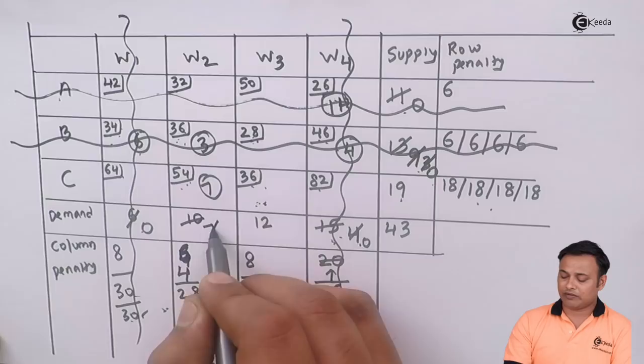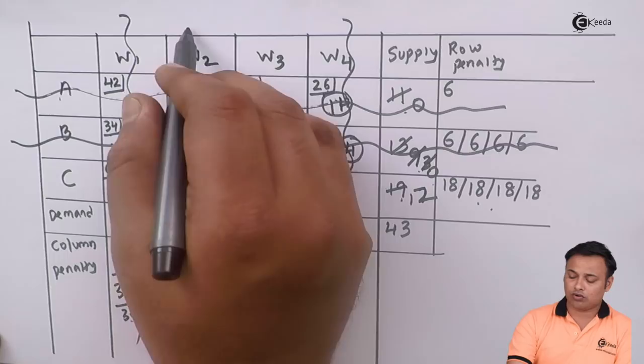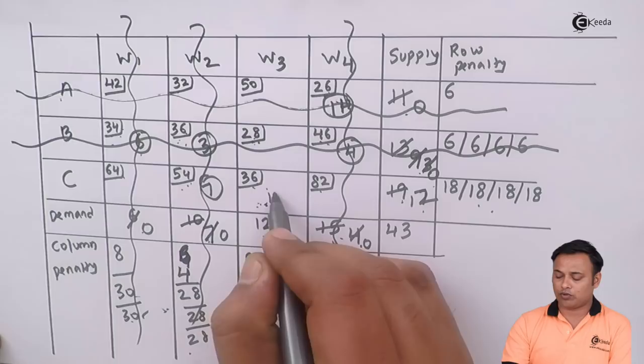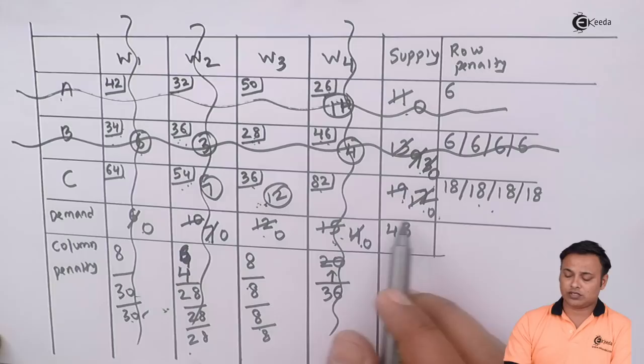Because we are left with only one row now, there cannot be any more penalties calculated. We'll simply do the allocation directly. This 7 demand will be satisfied from this supply of 19. 7 minus 7 is 0, or 19 minus 7 is 12. We have a zero, we'll cancel this.